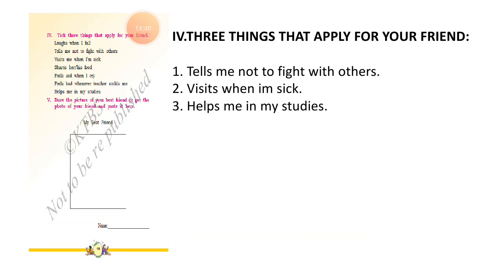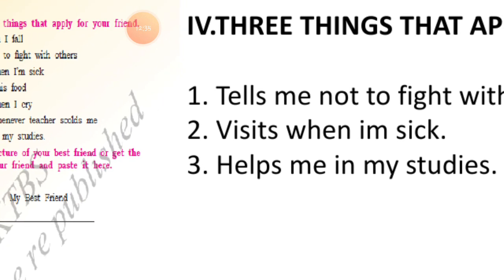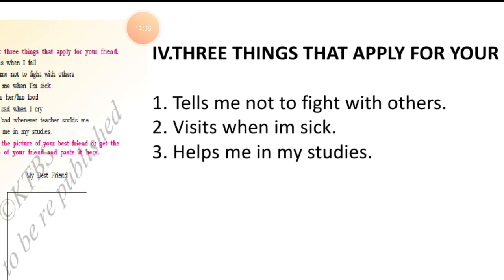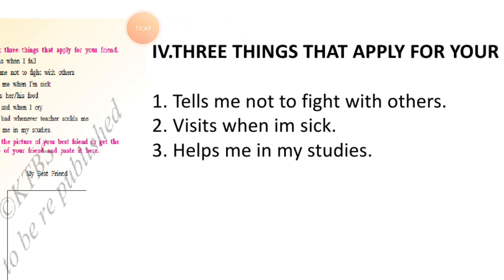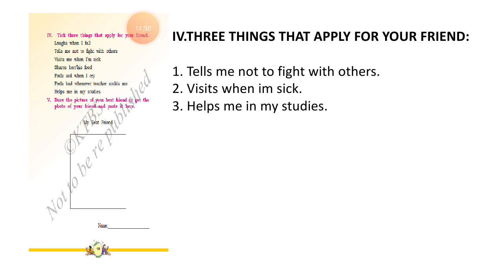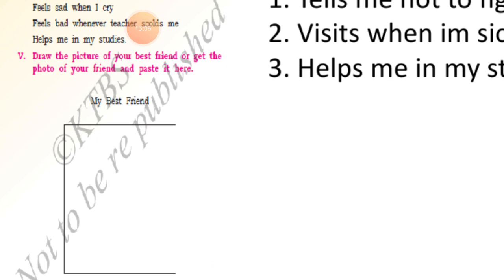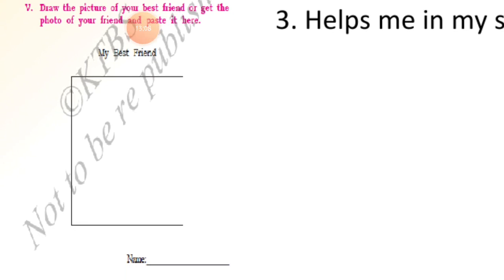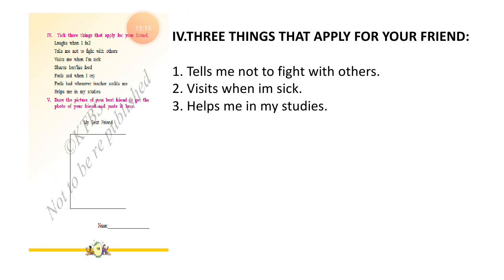Copy this in your homework. Page number ten: tick three things that apply to your friend. For me, three things apply to Arman: he will always tell me not to fight with others, he will come and visit me when I am sick, and he will help me in my study. Tick whatever applies to your friend. Lastly, draw your best friend's picture or paste it here. With this we are completing the unit one exercises. Thank you, children.